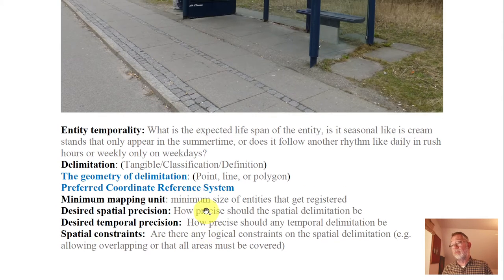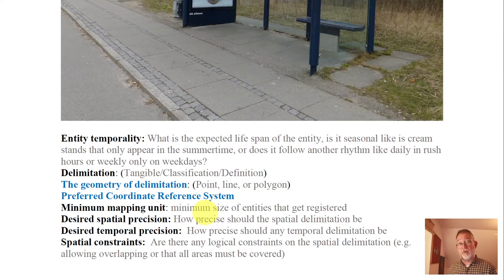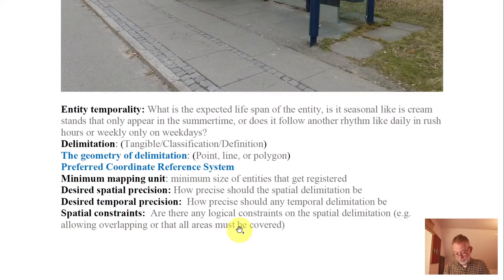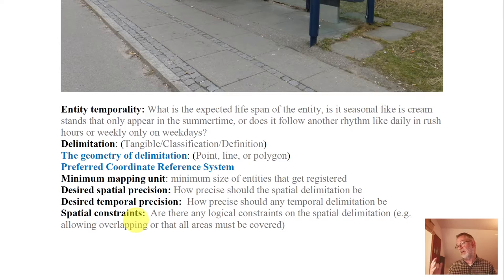Spatial constraints: may one bus stop overlap another bus stop? Does a bus stop have to be on a road, or does it have to be on land? There are lots of different spatial constraints that can be important. For our terrain example — lowland, foothills, and mountains — does every location have to be in one of those classes, or can there be unclassified areas? Are there rules about where things can be, or is it okay that there are places with no objects? That is a spatial constraint.